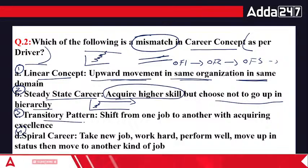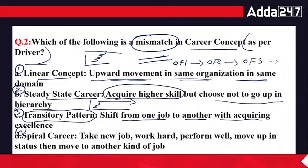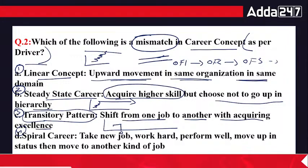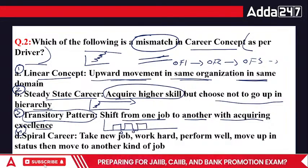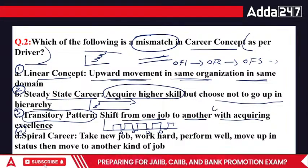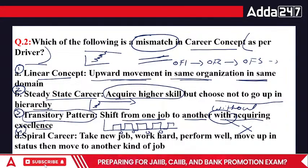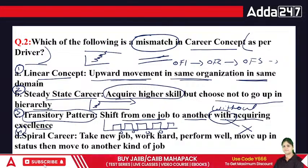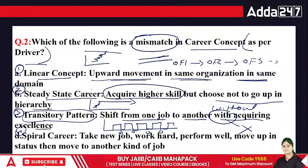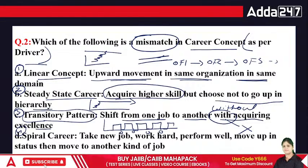The transitory career pattern is shifting from one job to another without acquiring excellence. For example, you joined as an animator, worked for one or two years, then left and started in marketing from zero, worked two years, then left again. You keep changing patterns but without acquiring any excellence in any field — that is the transitory career.